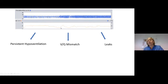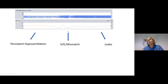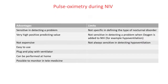The same applies to a pattern of prolonged desaturation, which may be due to a persistent type of hypoventilation during non-invasive ventilation, or due to ventilation-perfusion mismatch — frequent in COPD patients ventilated at home — or due to leaks.